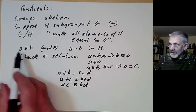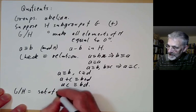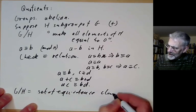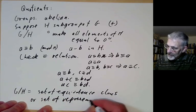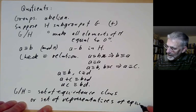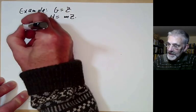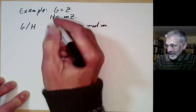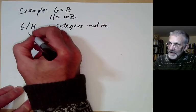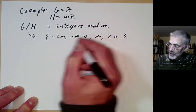This means we can define G/H as the set of equivalence classes. Thinking of equivalence classes is a bit of a headache, so usually we just take a set of representatives. We've done this for integers modulo n: if we take G to be the integers and H to be m times the integers, then G mod H is just the integers modulo m. The equivalence class containing 0 would be {…, −2m, −m, 0, m, 2m, …}.